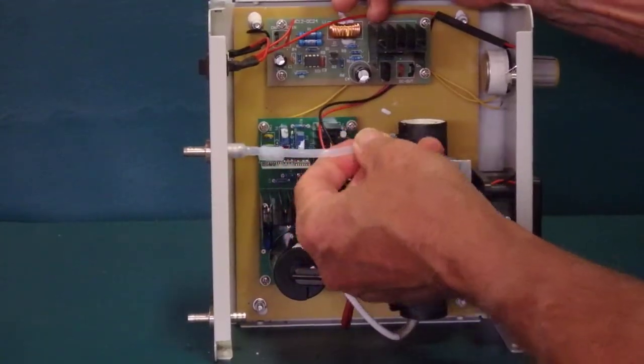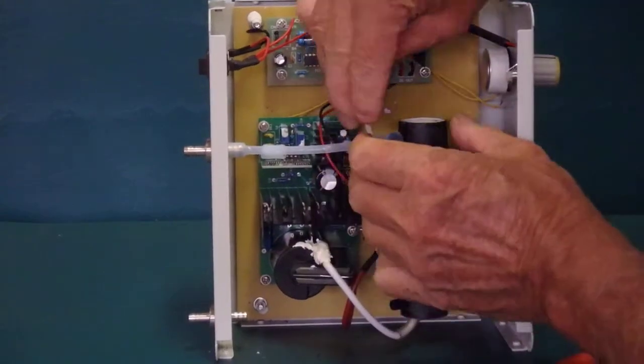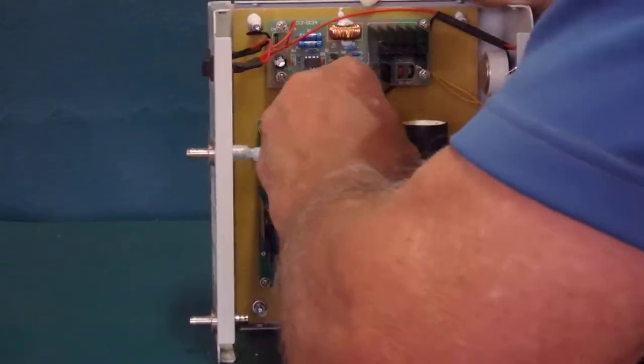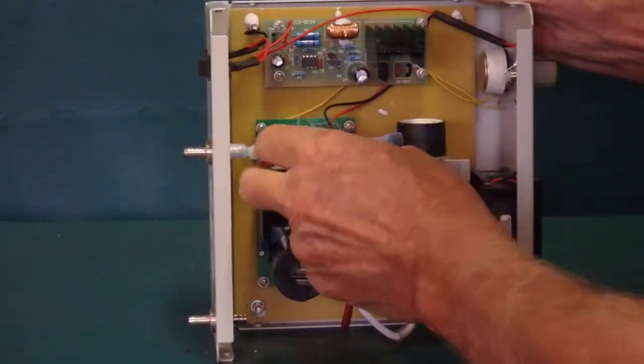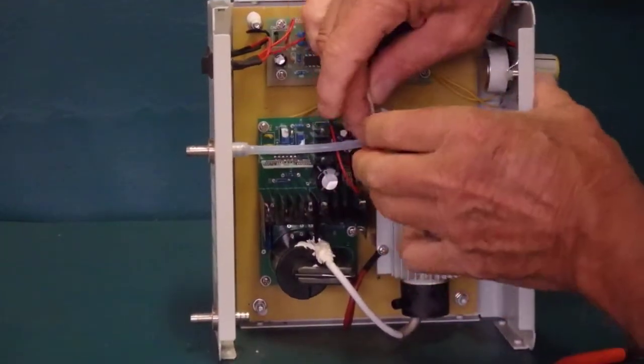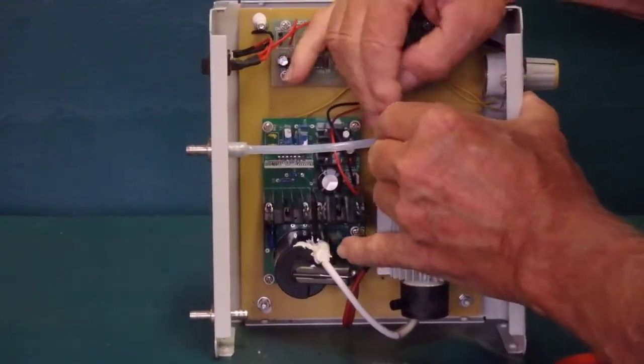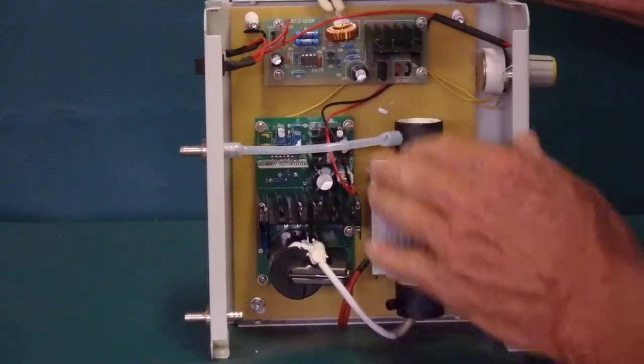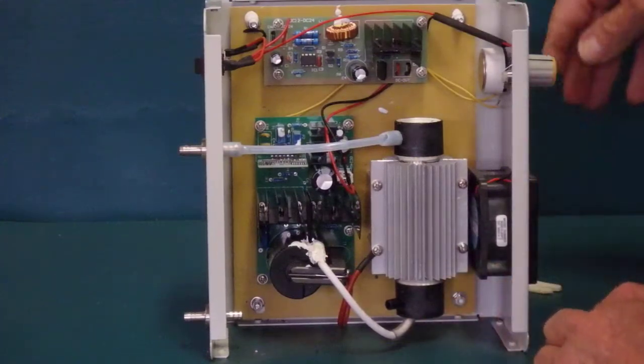Push the other end on, again, on as far as it can go, wiggling it to help get it on there. Then your sleeve goes over that, and again, on as far as it'll go there. So that's the replacement of the tubing.